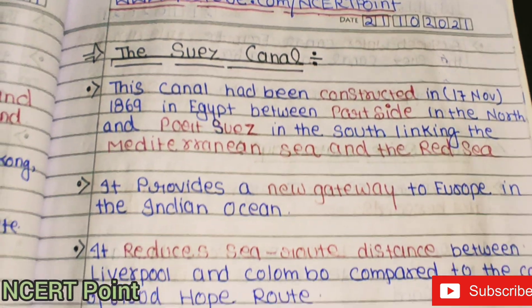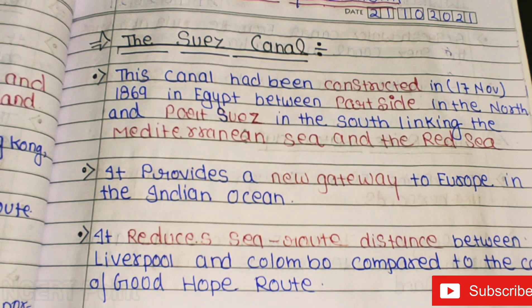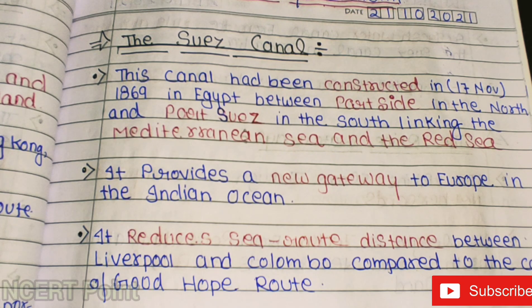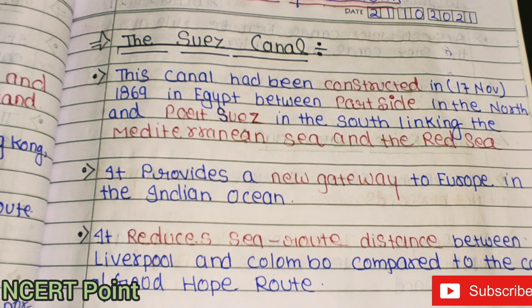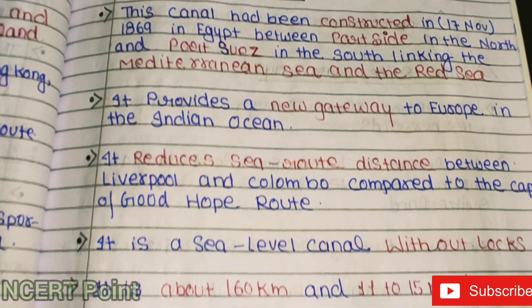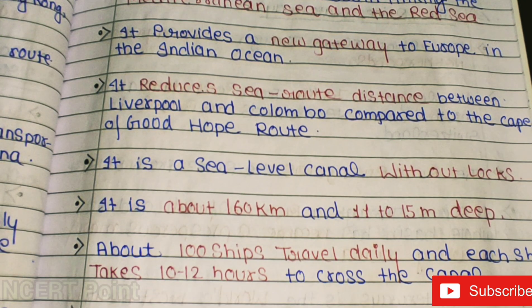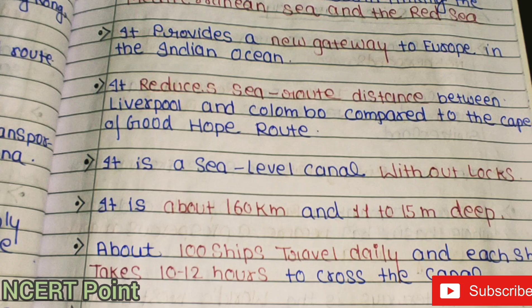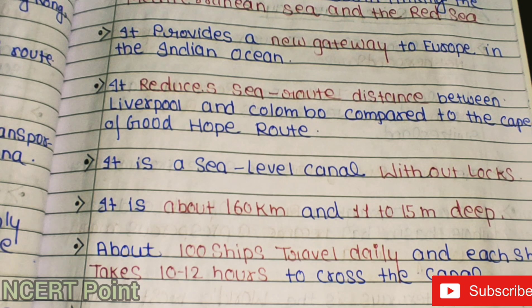The Suez Canal was constructed on 17th November 1869 in Egypt, between Port Said in the north and Port Suez in the south, linking the Mediterranean Sea and the Red Sea. It provides a new gateway between Europe and the Indian Ocean, reducing the sea route distance between Liverpool and Colombo compared to the Cape of Good Hope route. The canal is about 160 km long and 11 to 15 meters deep.